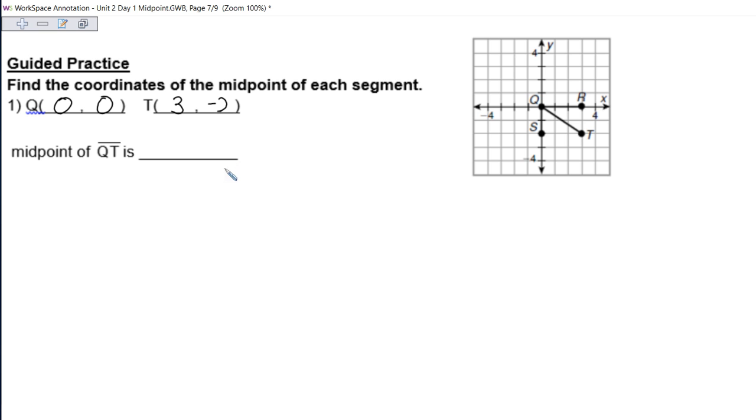And then we need to find the coordinates of the midpoint. So again, label your x's and y's if you need to. Add your x's together, so 0 plus 3, and then divide by 2. Add your y's together, so 0 plus negative 2, and then divide by 2.